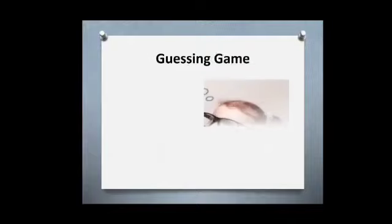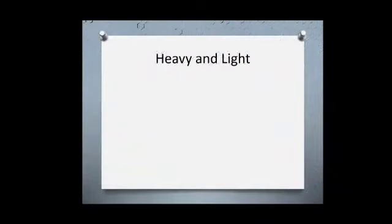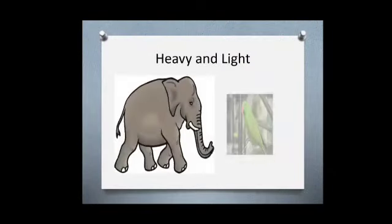It's time for you, kids. Now guess which object is heavy and light. An elephant is heavy whereas the parrot is light.